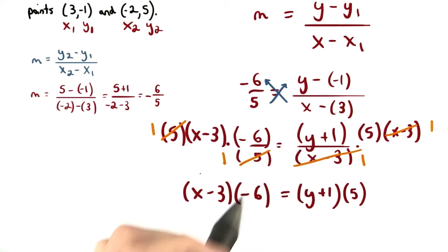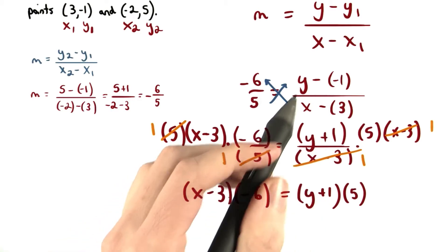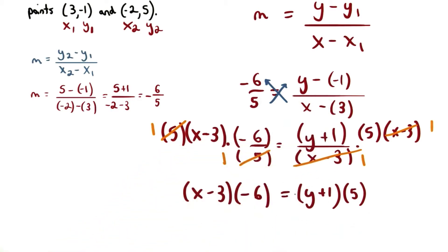Negative 6 times x minus 3 on the left, and 5 times y plus 1 on the right. Pretty cool. I distribute the negative 6 to the x and the negative 3, and I distribute the 5 to the y and the positive 1.